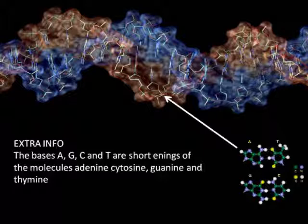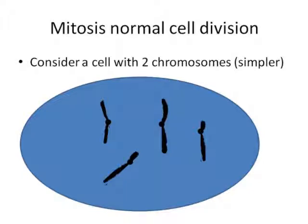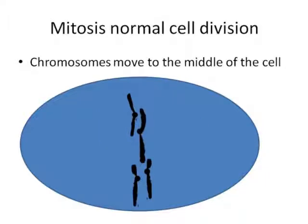Let's talk about mitosis — normal cell division. Skin cell, brain cell, bone cell, blood cell. This is how most body cells divide. We're going to consider a simple cell with just two chromosomes — chromosome 1 and chromosome 2. It's a standard body cell, so it's got a pair of chromosome 1s and a pair of chromosome 2s. The first thing that happens is that the chromosomes move to the middle of the cell and the DNA replicates.